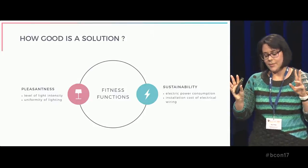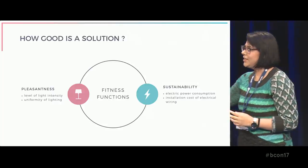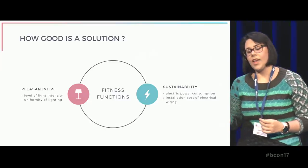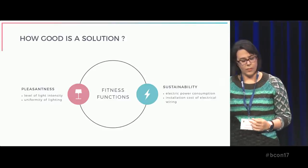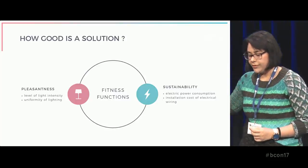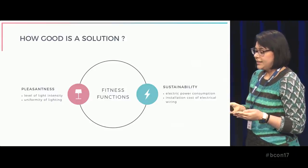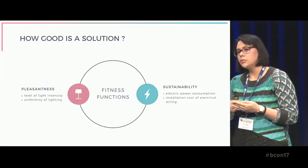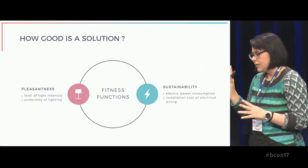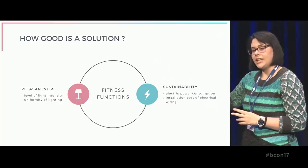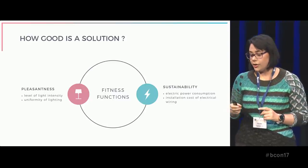The goodness of a solution is measured by its fitness values — fitter individuals have a higher chance to survive. I decided to evaluate how good a lighting system is by defining two groups of fitness functions. On one hand, we have the pleasantness of the lighting system: the compliance to a target level of light intensity together with the uniformity of the overall illumination. On the other hand, I consider the sustainability of the lighting system: the amount of electrical power consumption together with the initial installation cost of the electrical wiring.